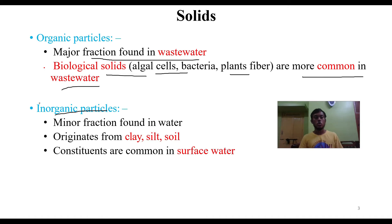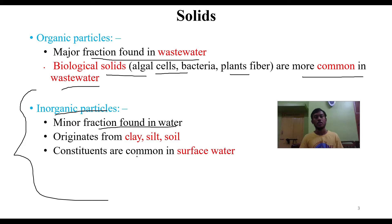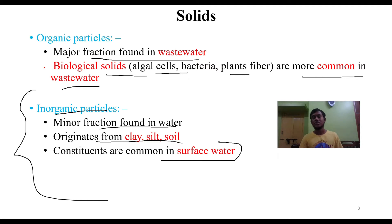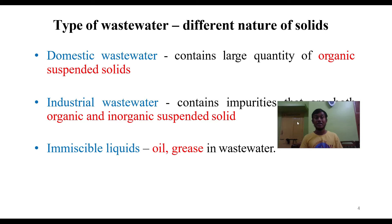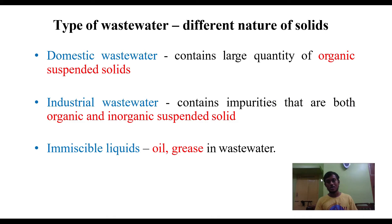Inorganic particles form the minor fraction found in water. These originate from clay, silt, and soil, and are constituents commonly found in surface water. Moving on, we'll talk about different types of wastewater and the different nature of solids that exist in them.